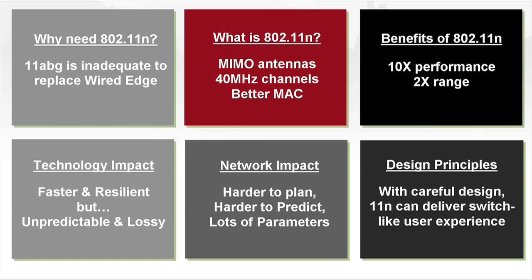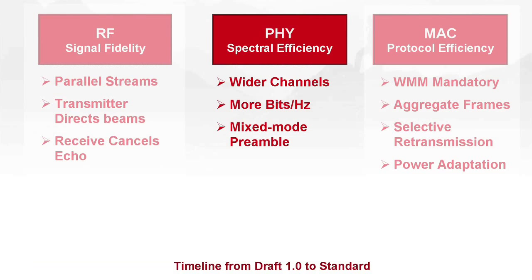The second key area is the physical layer. There are broadly three mechanisms here. Remember, you have a particular channel — the RF layer tried to clean out the channel, and the physical layer is now going to try to glean as many bits as possible out of a given channel. That's its job.